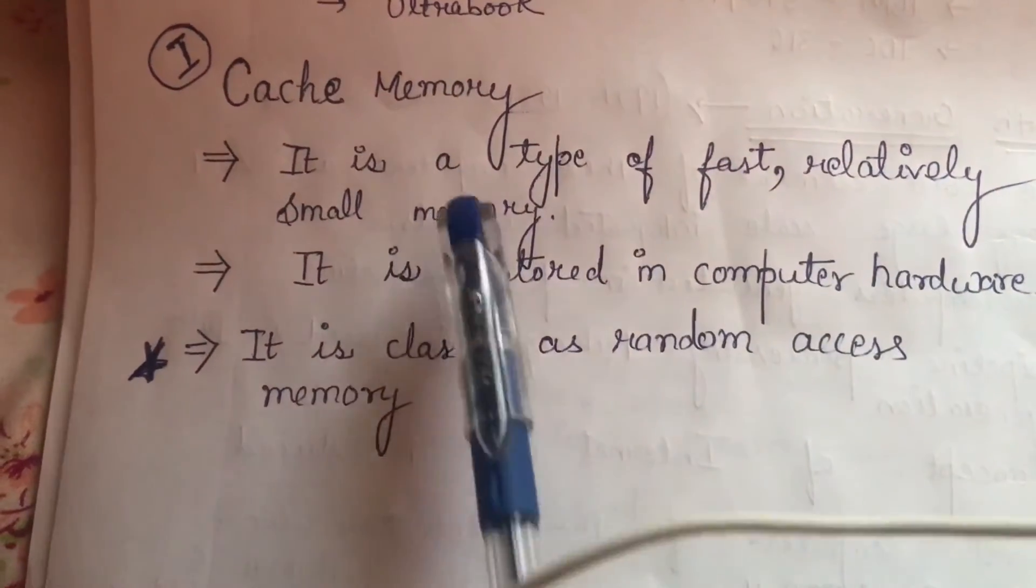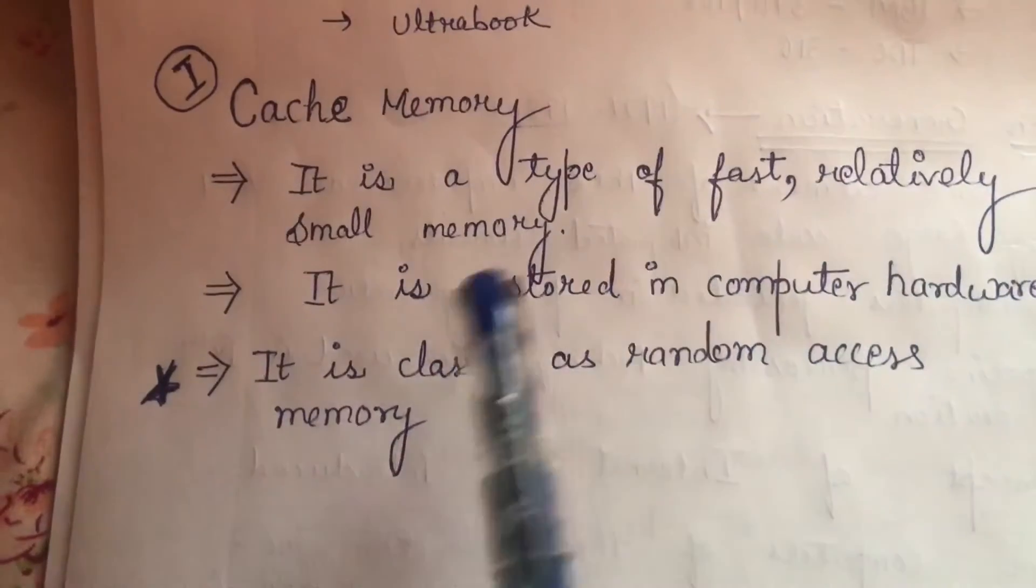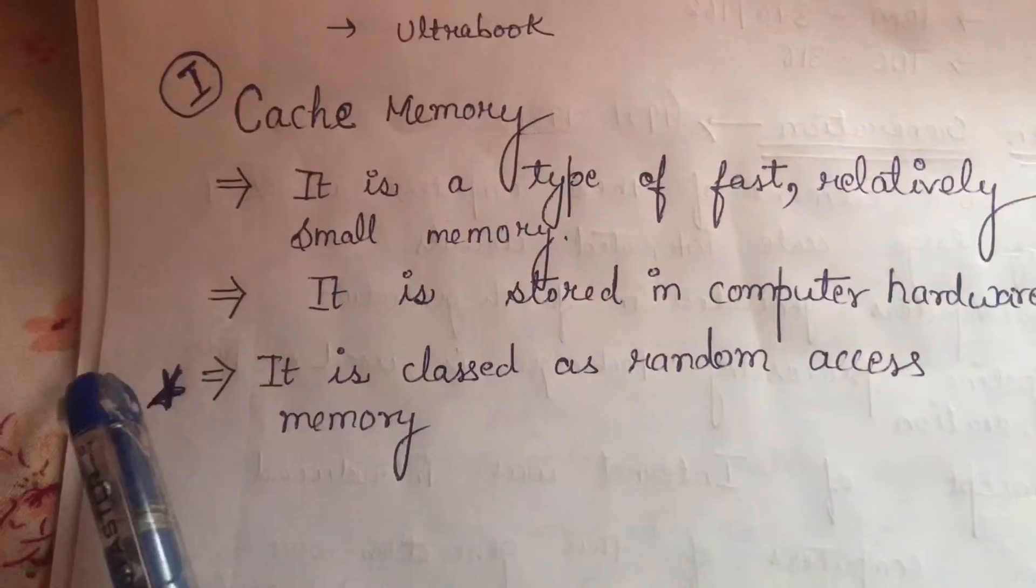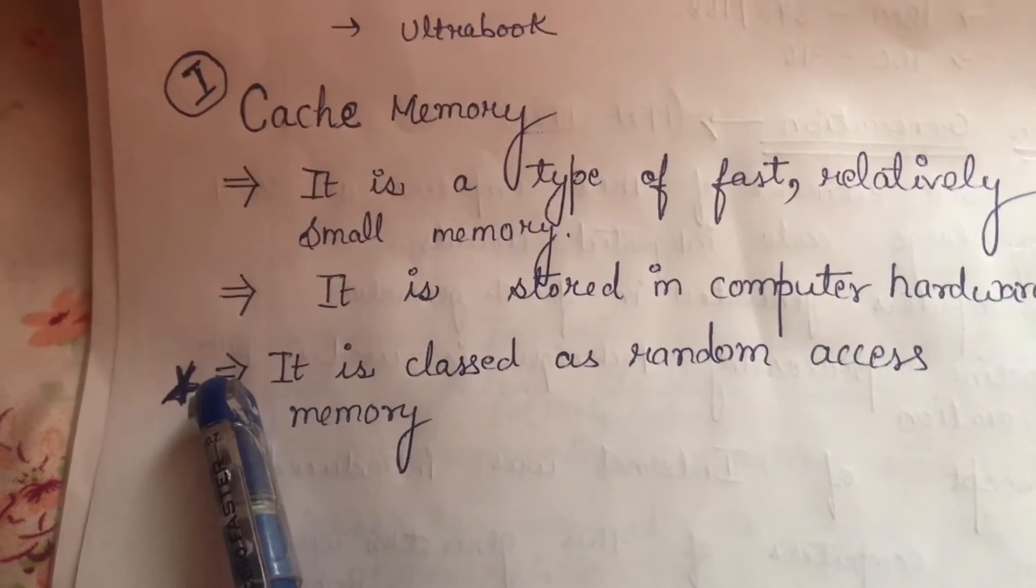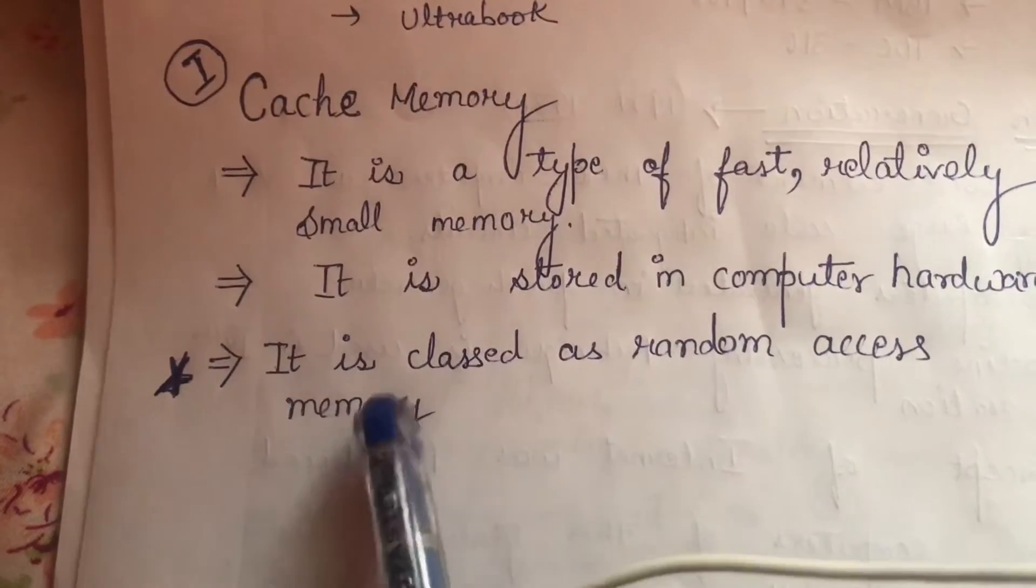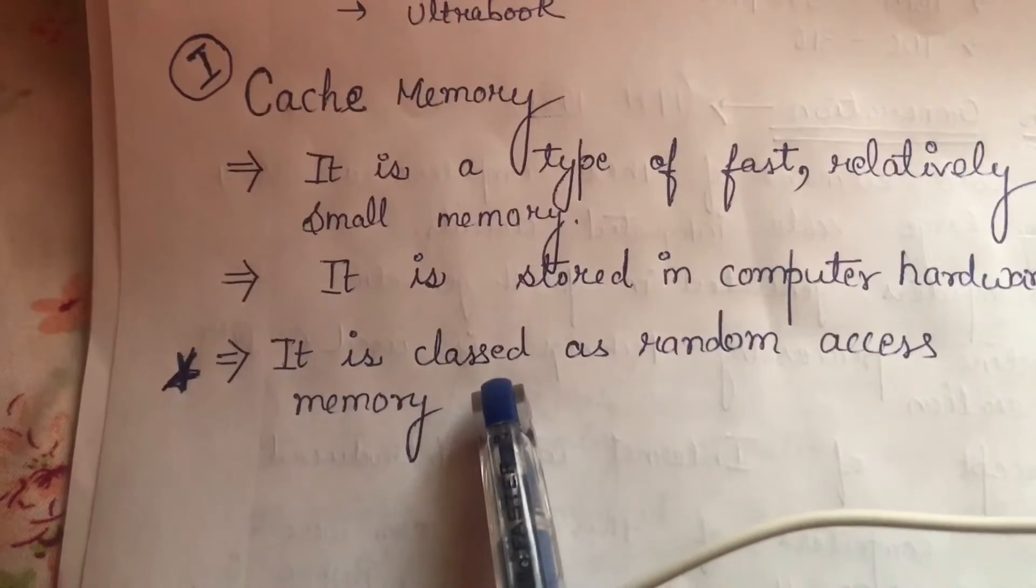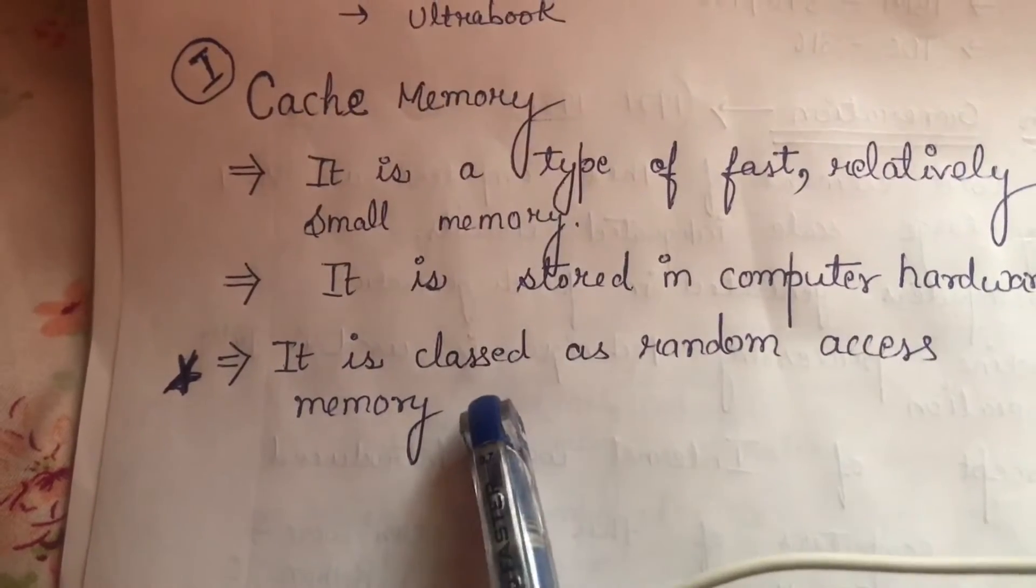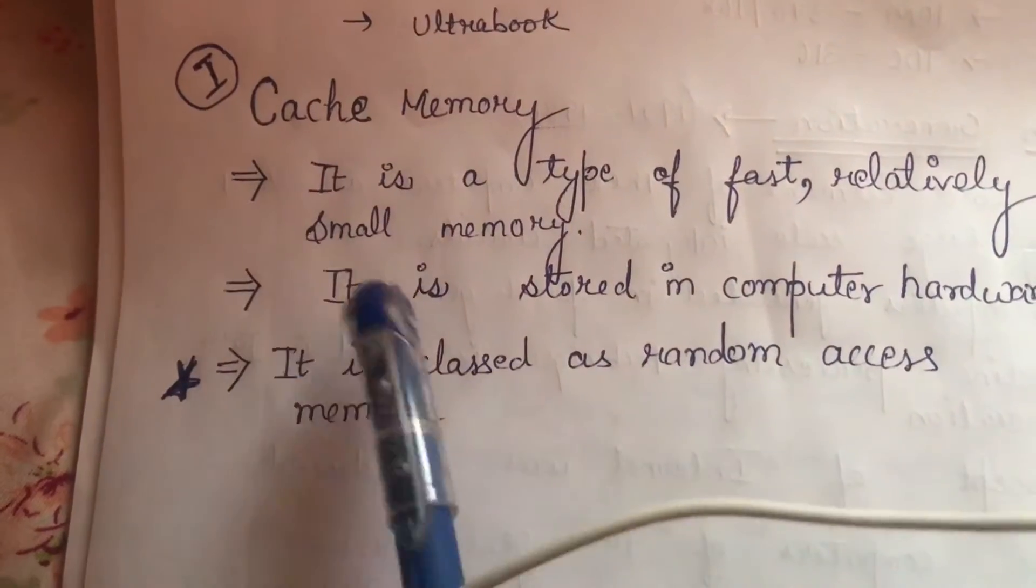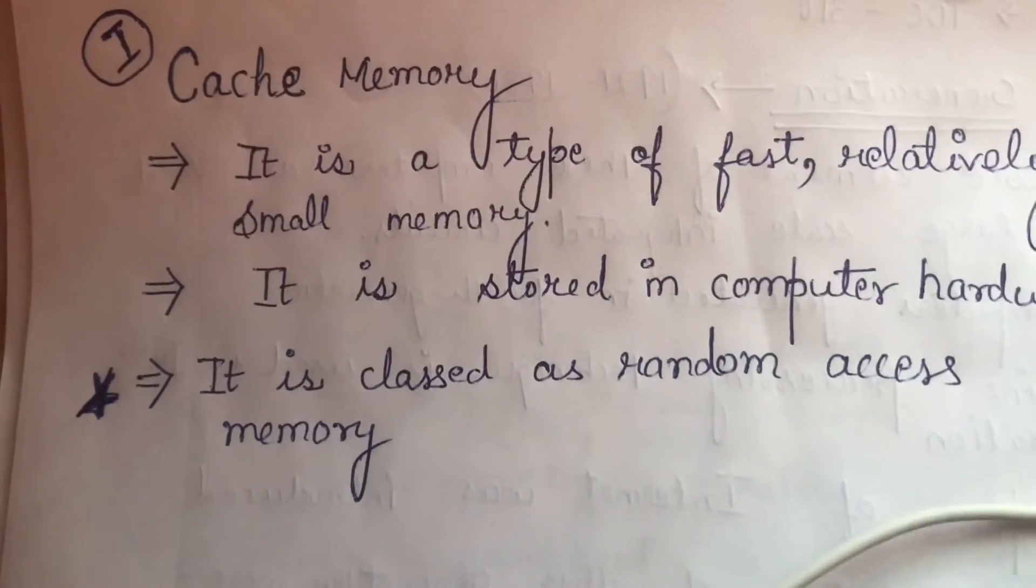It is classed as random access memory, so this is a very important point to remember about how it is classified - as random access memory. Because many people think that RAM and cache memory are different things, RAM is separate, ROM is separate, and cache memory is a different thing. But we should always remember this point: it is classed as random access memory.